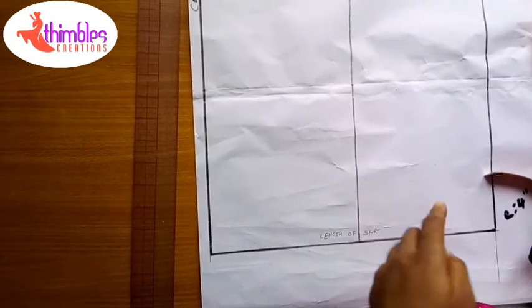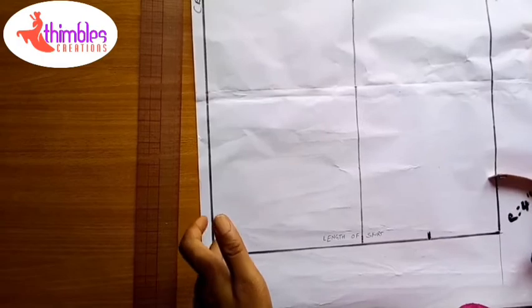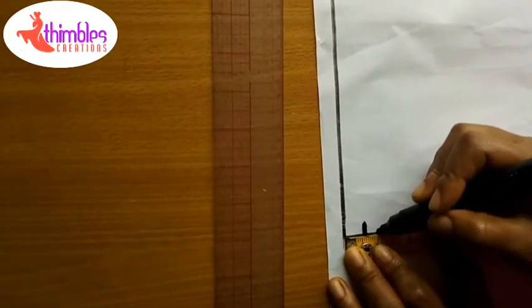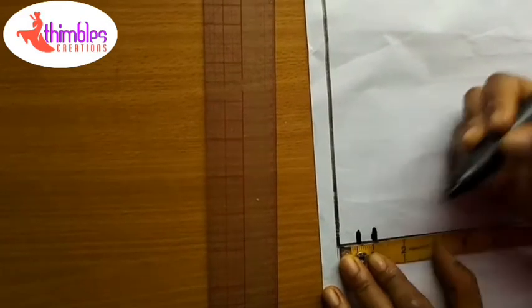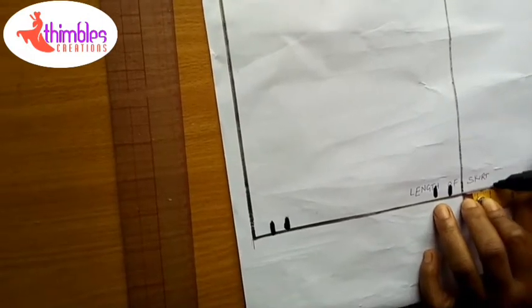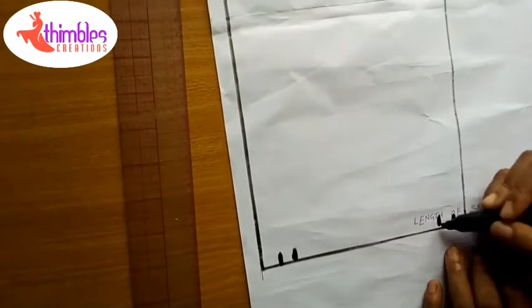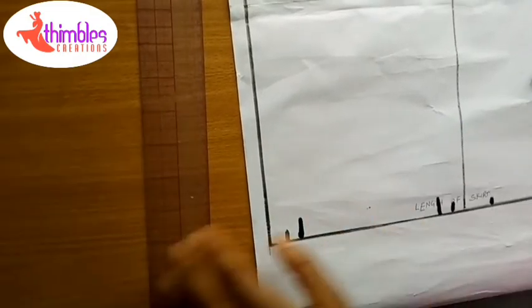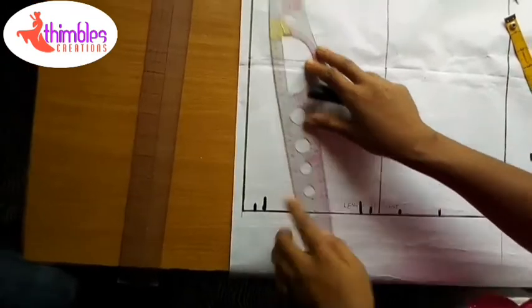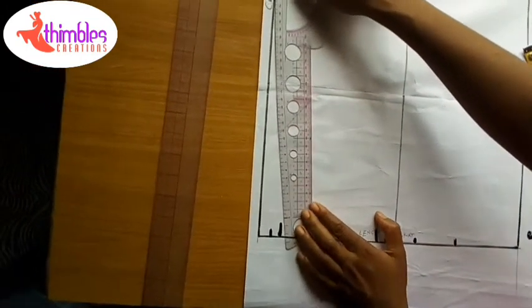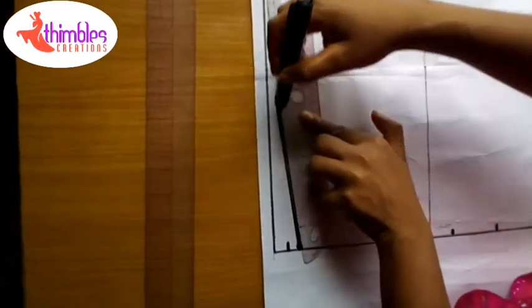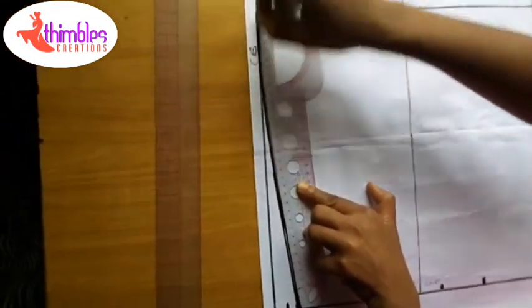The center back seam and the side seams. When I divide 4 into one, two, three, I have 1.3 here, 1.3 here, and 1.3 here. I'm going to take the line now. Using my curve from the hip, I'm going to connect it. So I'm connecting from here to my hip line.